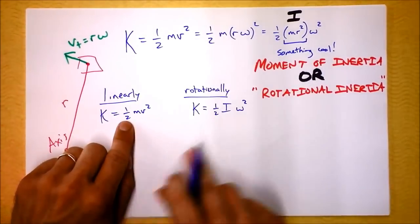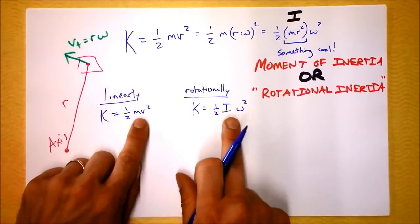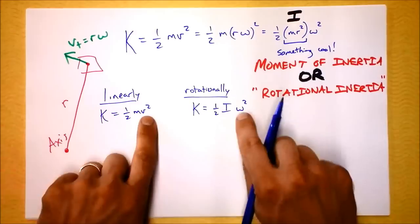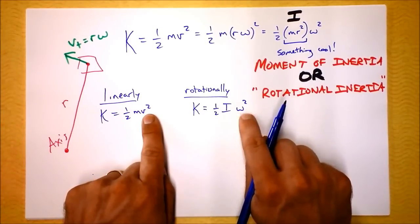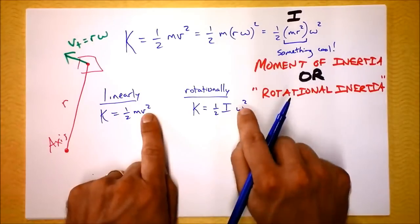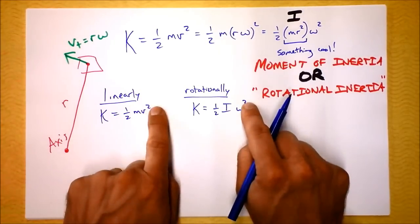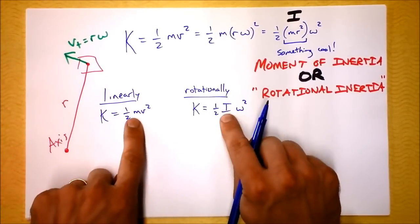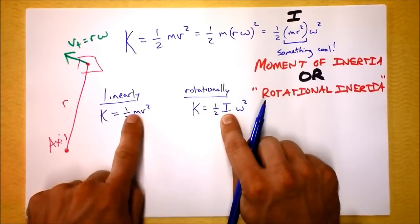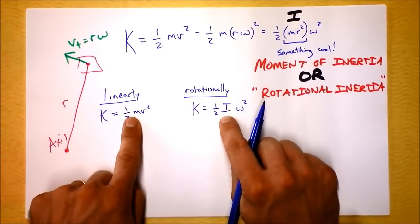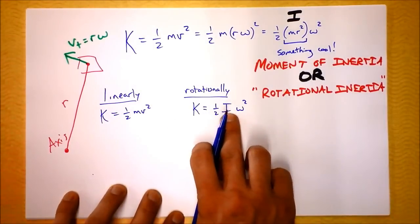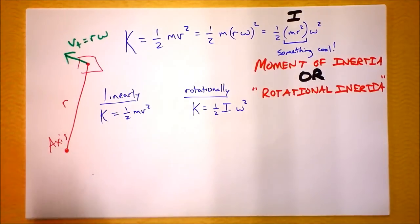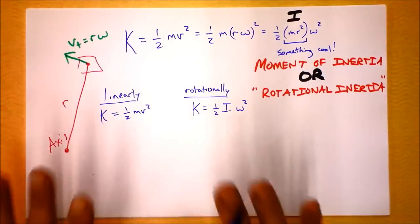So this is one-half in both of the equations, and this is, well, let's look at this V thing. This is speed, and this is rotational speed or angular speed. Velocity, angular velocity, and it's squared in both the equations. And so here we've got mass in the linear side and rotational mass or rotational inertia in the rotational side, the angular side. So I hope this equation makes sense to you.